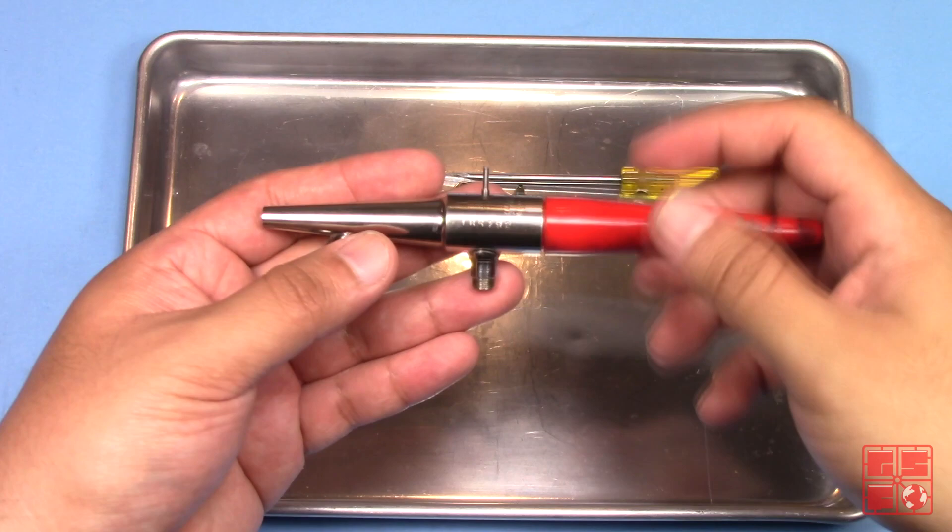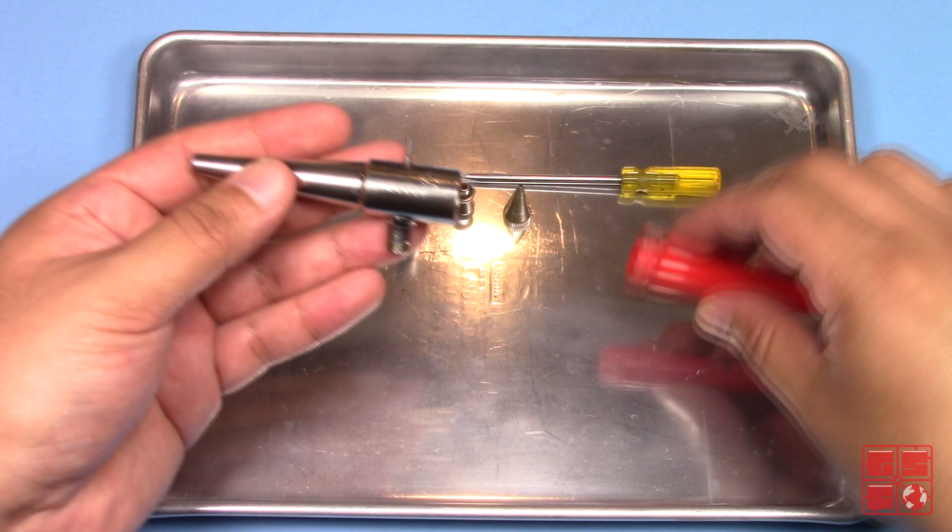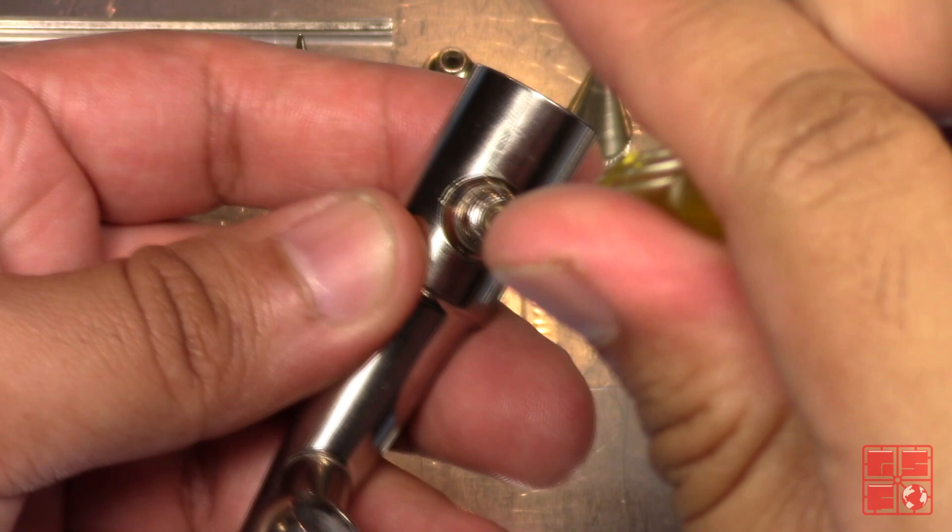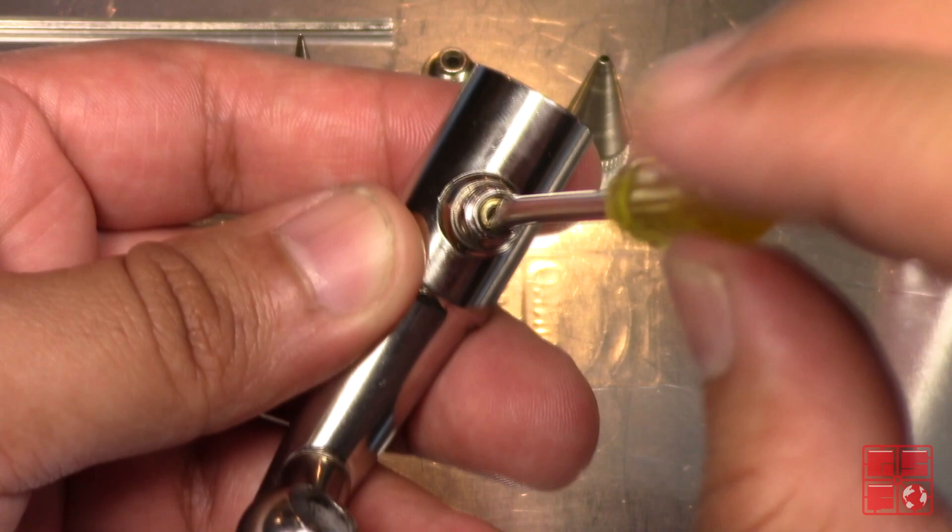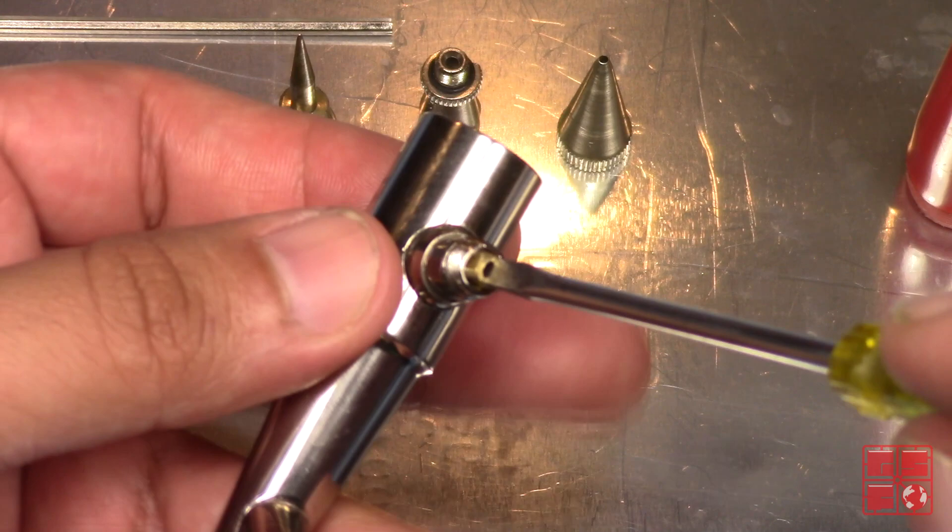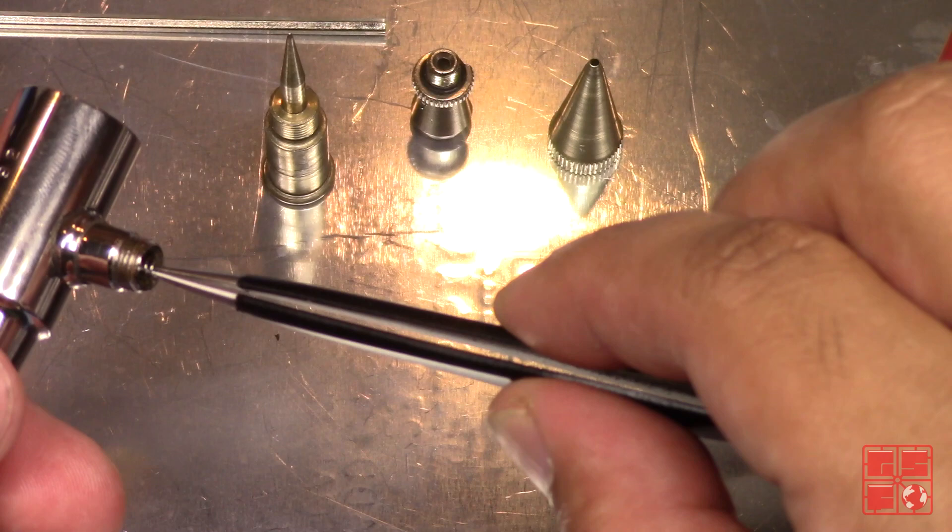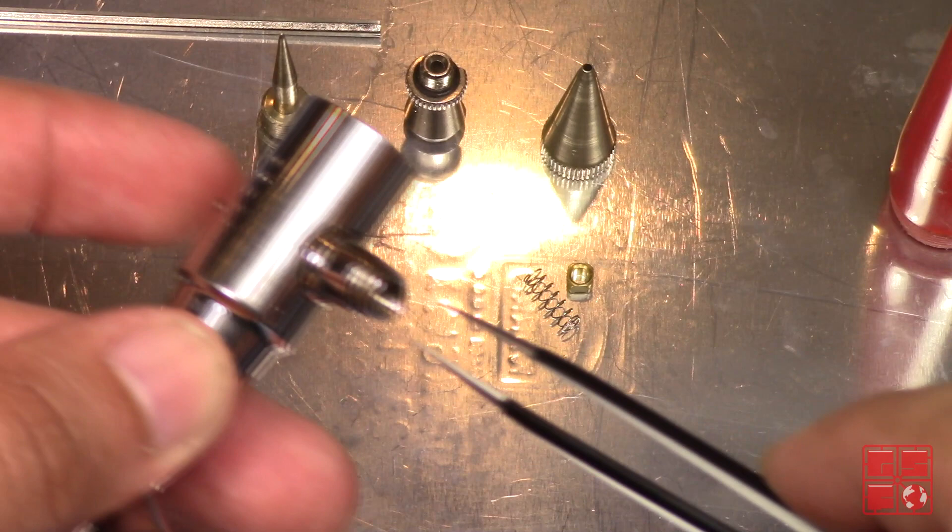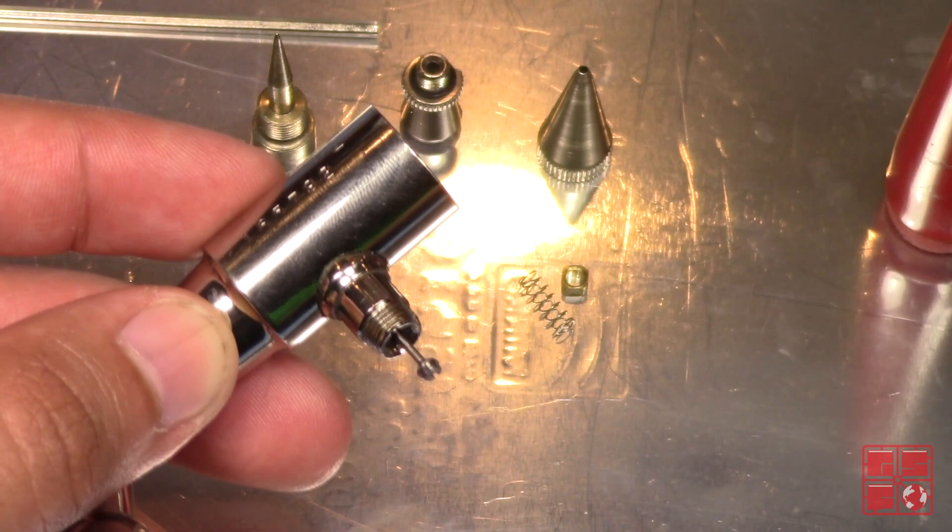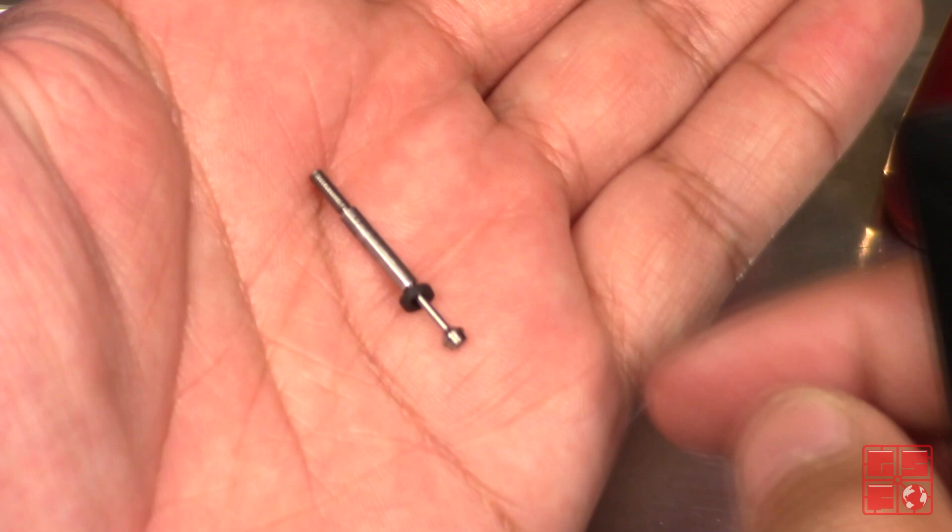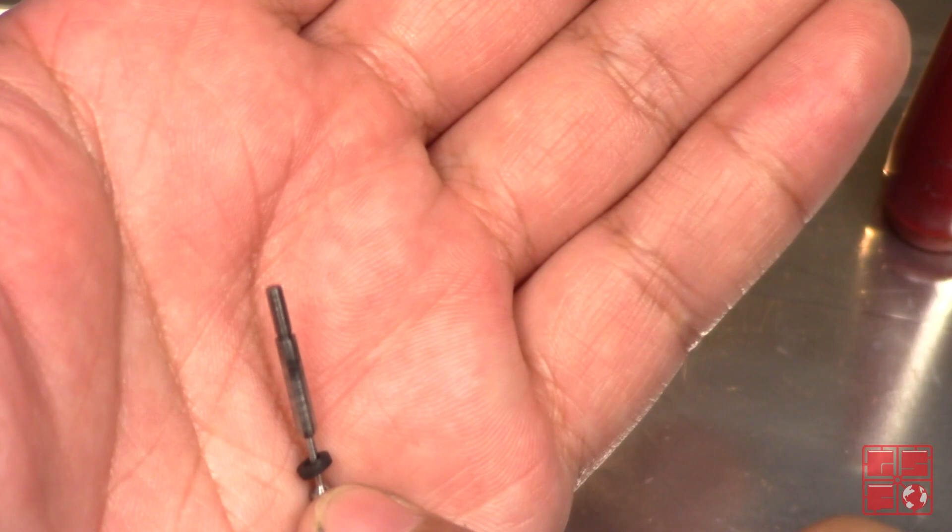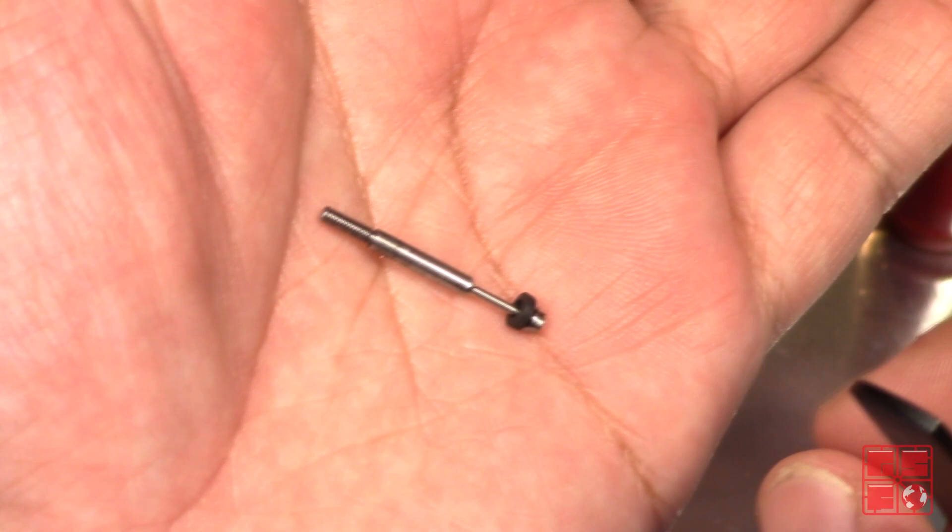I start by disassembling the airbrush. Then I carefully begin disassembling the air valve. The square nut is under tension from the spring. Take care not to let it spring away from you, because it's very small and it will be nearly impossible to find if it gets away from you. Remove the spring, then the air valve. The o-ring on the air valve plunger looks a bit dry, but that's alright because I'll be replacing the entire valve plunger.